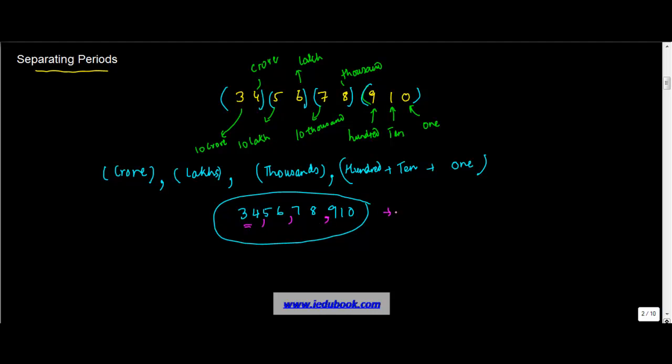Let's take an example. Say you're given the number 4, 6, 7, 2, 3, 1, 9, 1, and you're asked to write this number by separating periods. To do this, start counting from the extreme right moving towards the left. From the right, you have ones, tens, and hundreds, so this is one period.